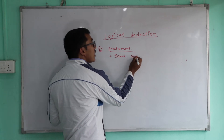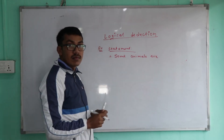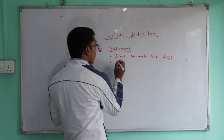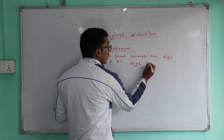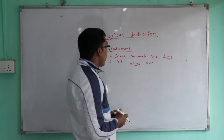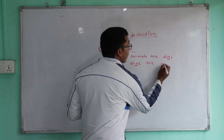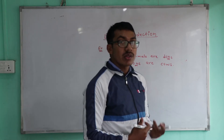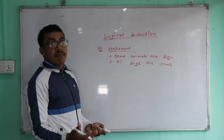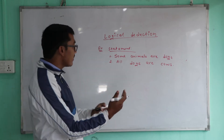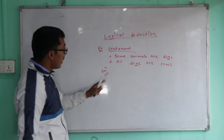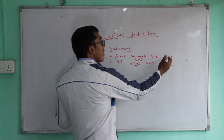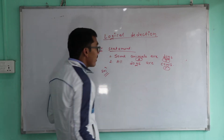Statement 1: Some animals are dogs. Statement 2: All dogs are cows. These are two statements. After stating them, we will talk about the conclusion. I will choose the best conclusion. Let animals be A, dogs be D, and cows be C.